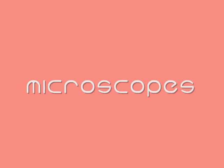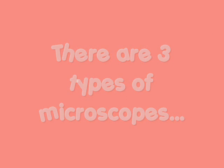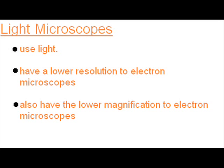In this lesson we're going to look at the different types of microscopes used in biology. Firstly, light microscopes. They obviously use light. They have a lower resolution than electron microscopes, with a maximum resolution of about 0.2 micrometers. The maximum useful magnification of a light microscope is about 1500.